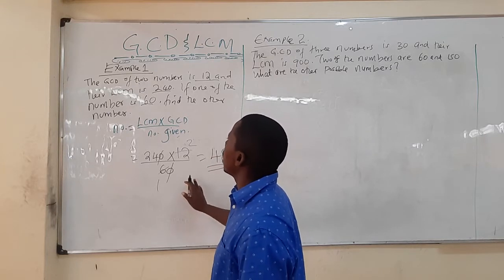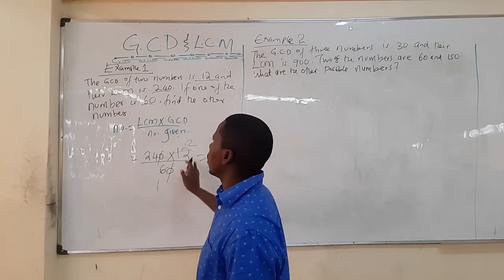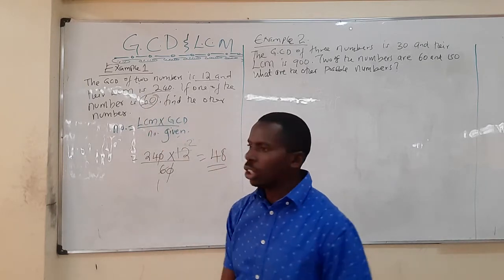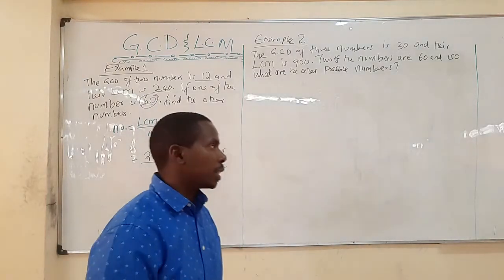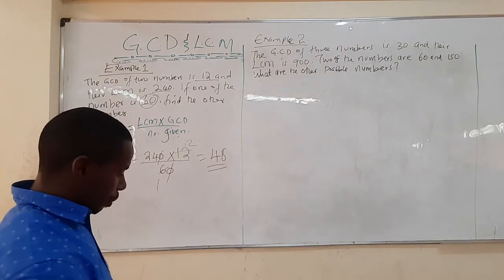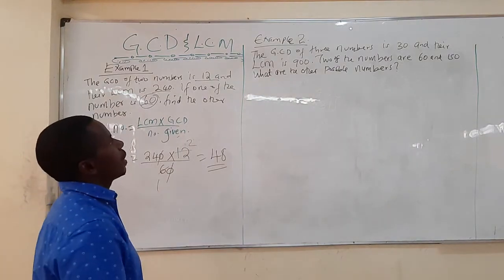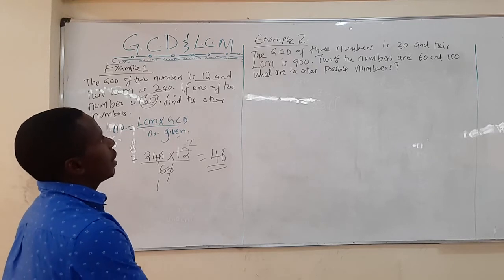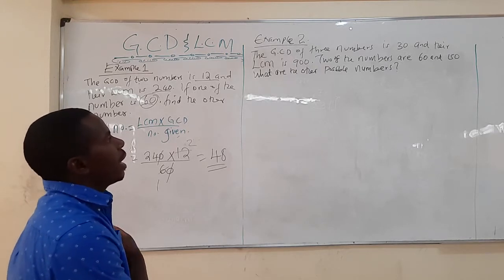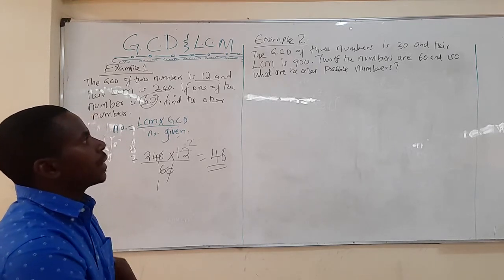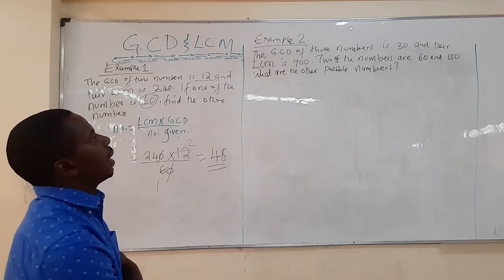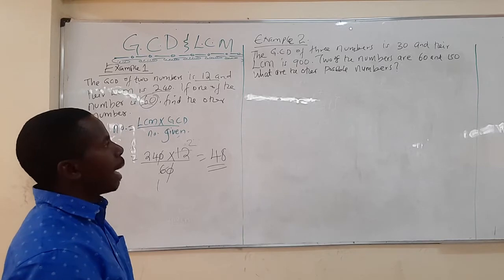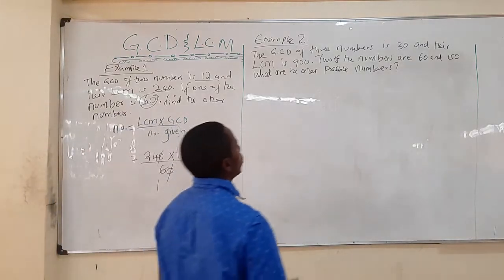So the other number is 48. The two numbers whose LCM is 240 and GCD is 12 are 60 and 48. Now let's look at Example 2: we have been told that the GCD of three numbers is 30 and the LCM is 900.